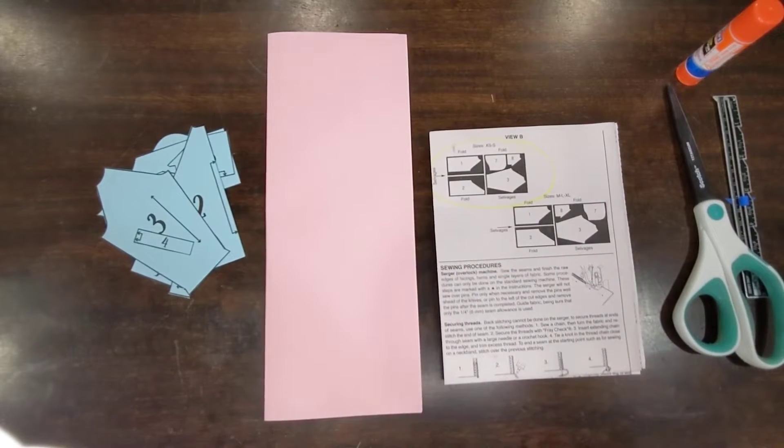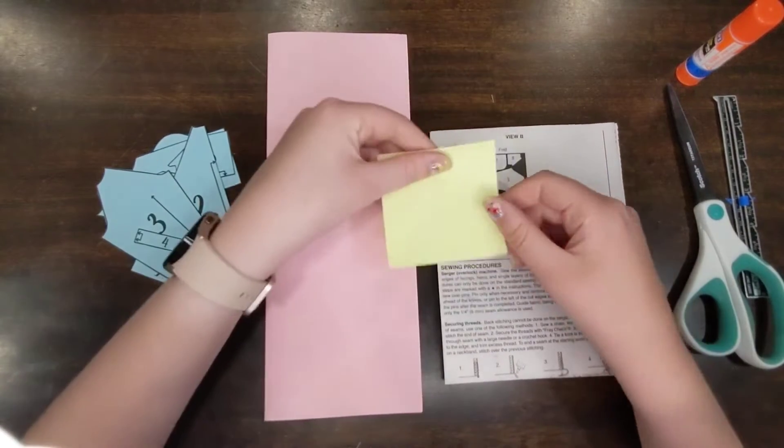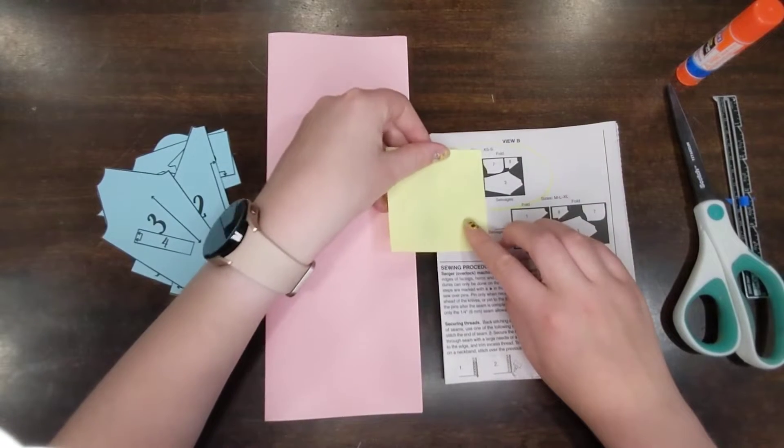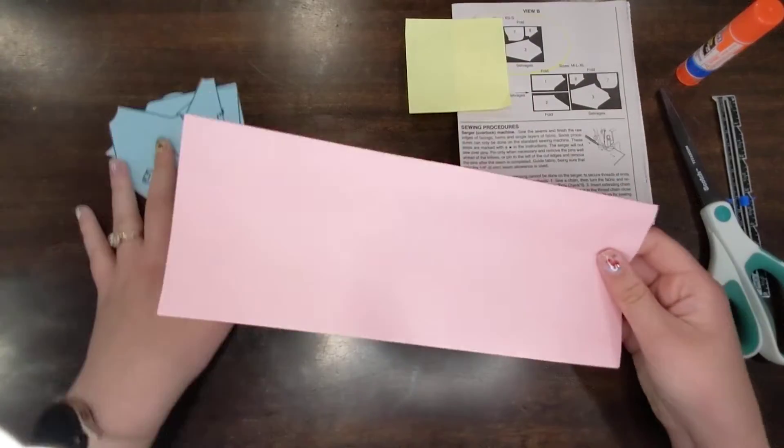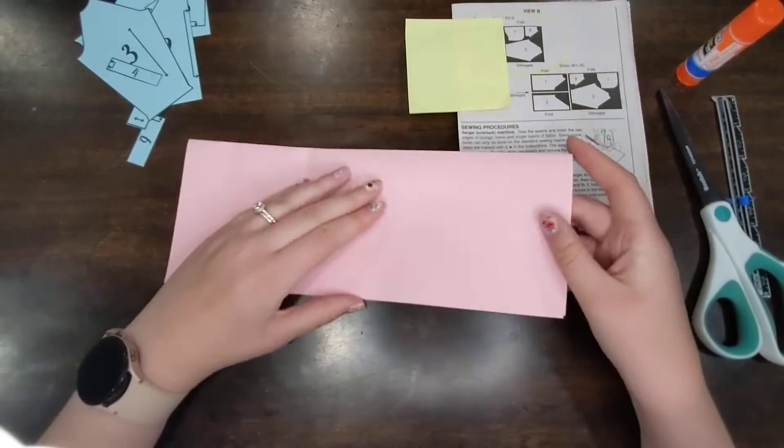We're going to ignore this half for right now. I'm just going to cover it up so we're not stressed about this. Right now, I'm only doing this first layout. So what I'll do is I'll take my fabric, this is my fabric. I fold it in half.